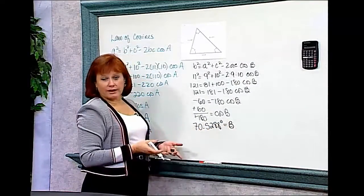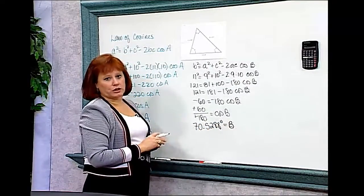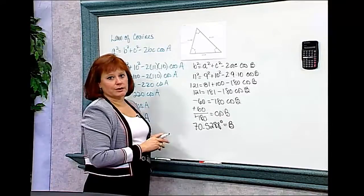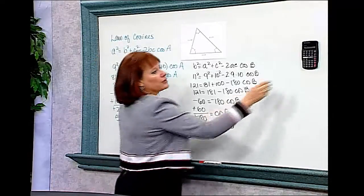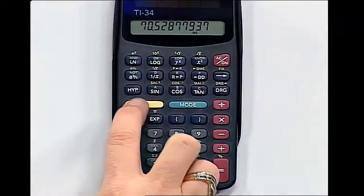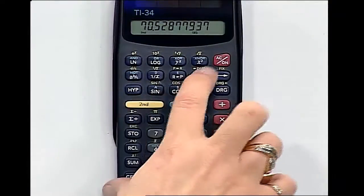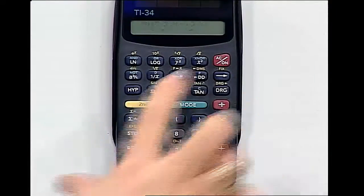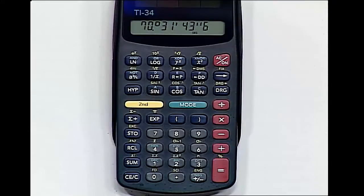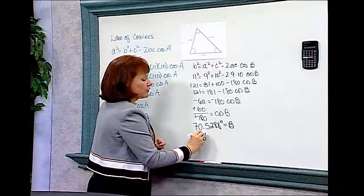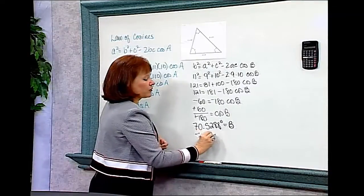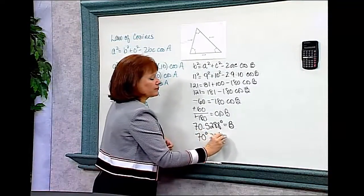I probably don't want to leave that as a decimal — I want to change it to degrees, minutes, seconds. So I'll access the degree-minutes-seconds button, and I get 70 degrees, 31 minutes, and 43 seconds, which I'll round off to 70 degrees and 32 minutes.